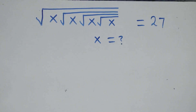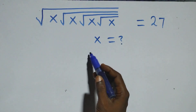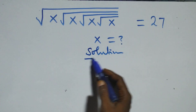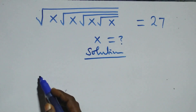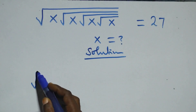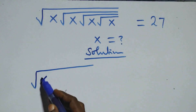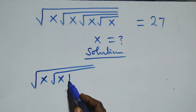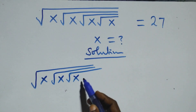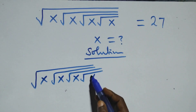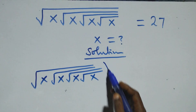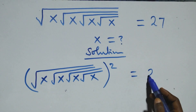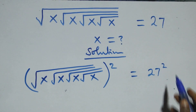You are welcome to solve this nice square root problem. We take the square on both sides, and here we have square root of x times square root of x, square root of x and square root of x squared. Then this equals to 27 squared as well.